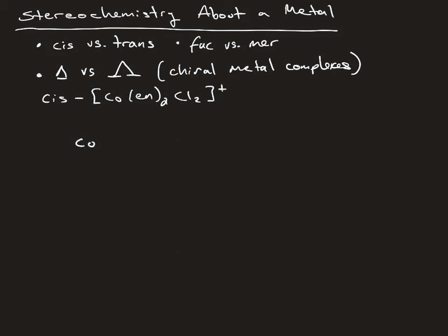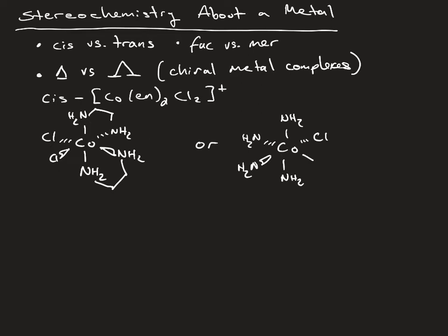So drawing these out, we can draw the orientation in this way, or we can draw the delta isomer like this, and these two are mirror images of each other. This is the delta isomer. And this is the lambda isomer.